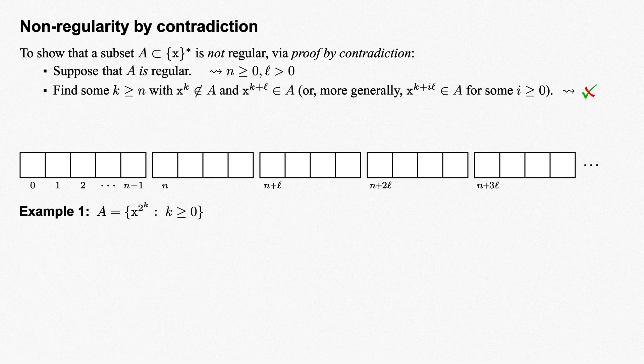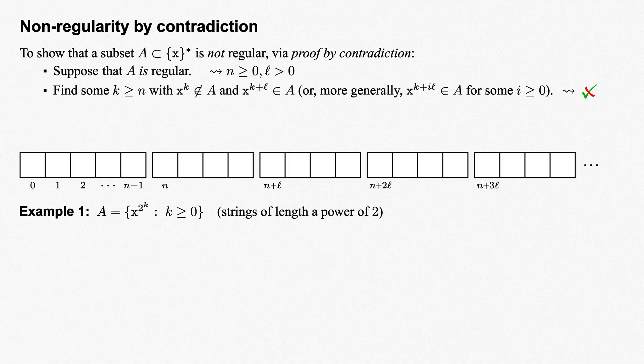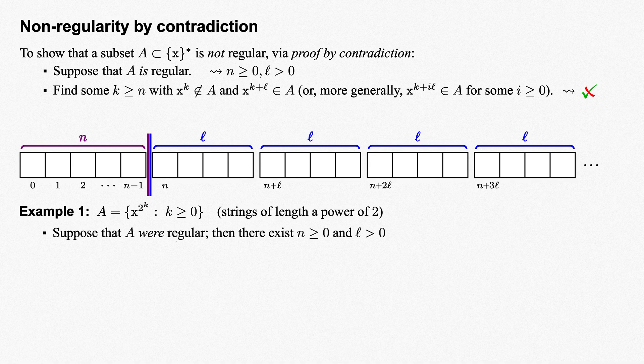For our first example, let A be the set x to the 2 to the k where k is greater than or equal to 0 — that is to say, strings of x's of length some power of 2. Powers of 2 grow, literally, exponentially, so there is no way this set of strings could eventually fall into a periodic pattern. Let's see how to explicitly use proof by contradiction to show this set of strings is not regular. Suppose it were regular. Then there exists some n greater than or equal to 0 and L greater than 0, so that for all k greater than or equal to n, x to the k is in A just when x to the k plus L is in A.